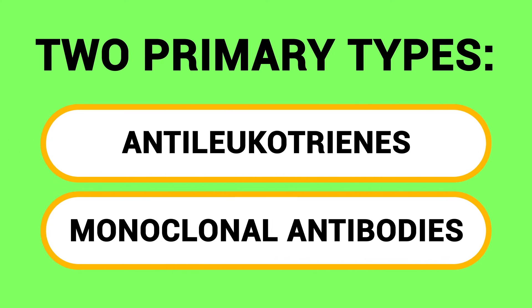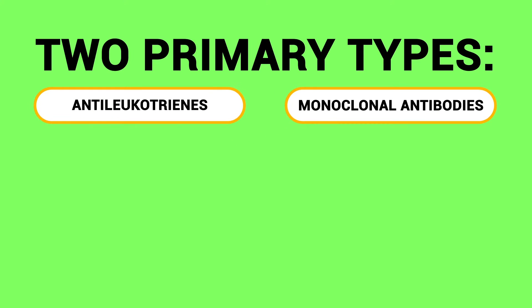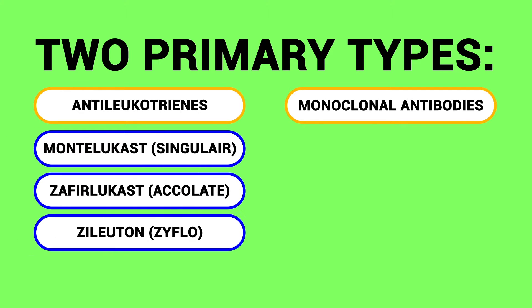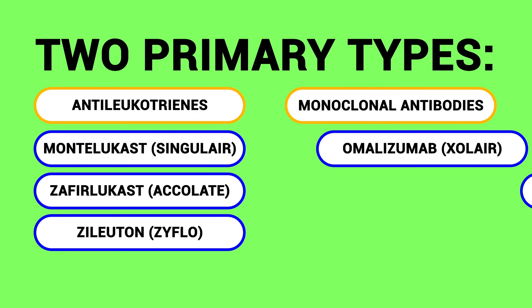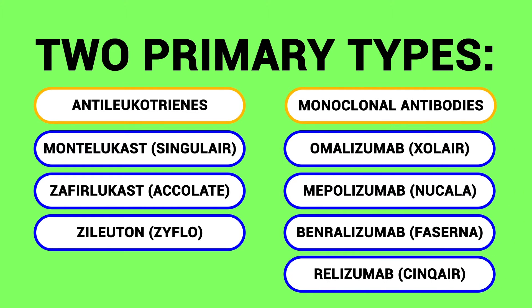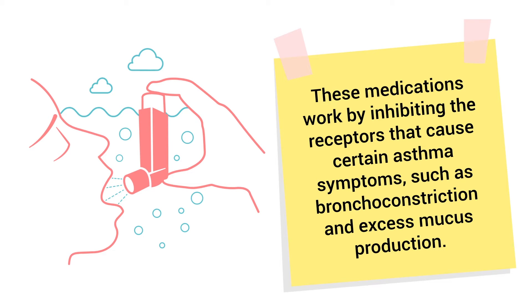The two primary types of non-steroidal anti-asthma agents include antileukotrienes and monoclonal antibodies. For antileukotrienes, you have Singulair, Accolate, and Zyflo. For monoclonal antibodies, you have Xolair, Nucala, Fasenra, and Cinqair.